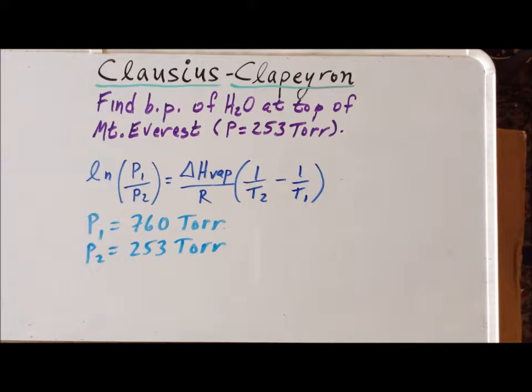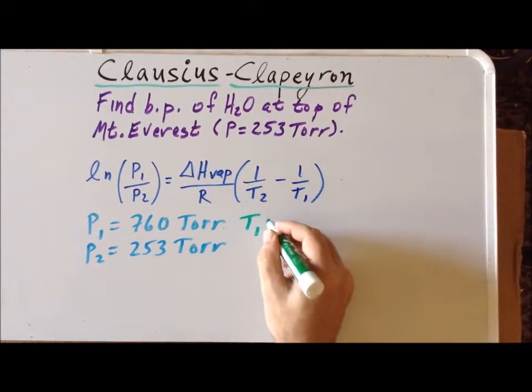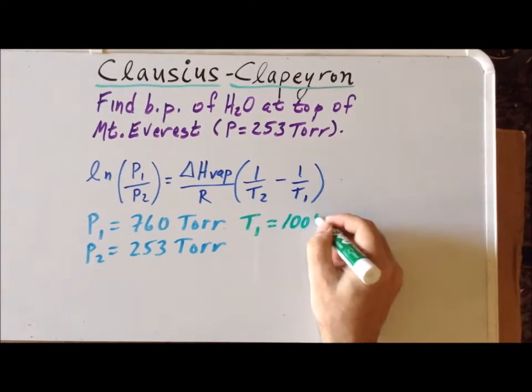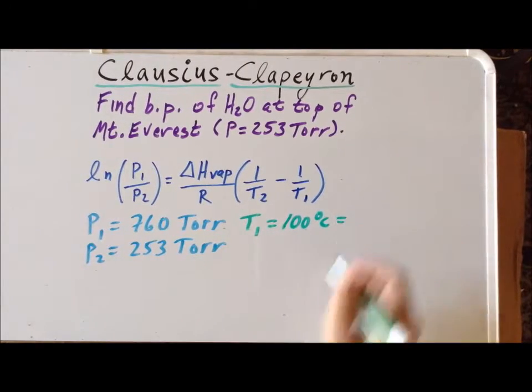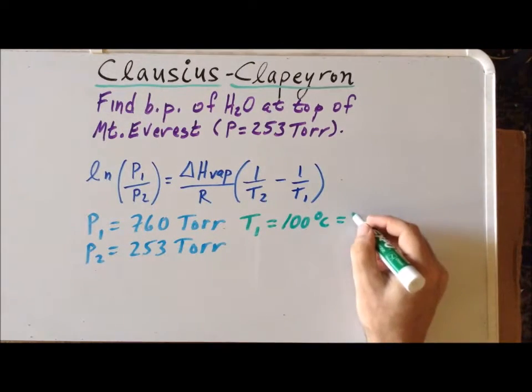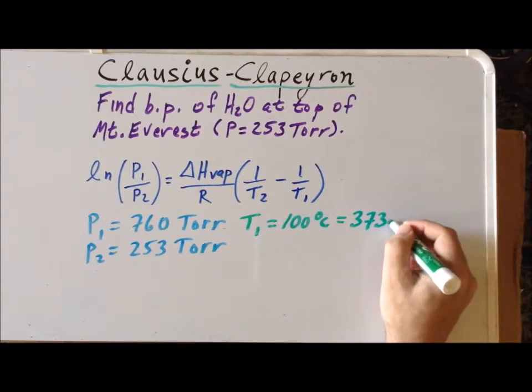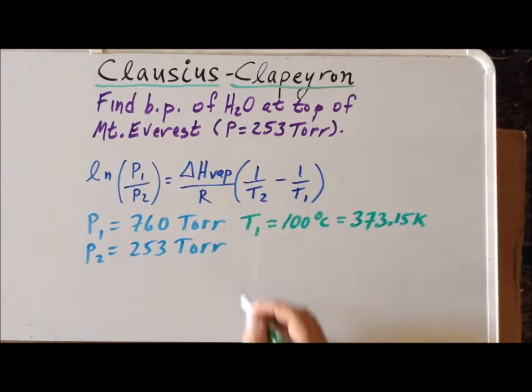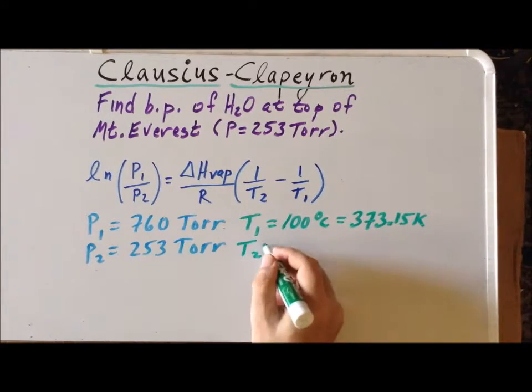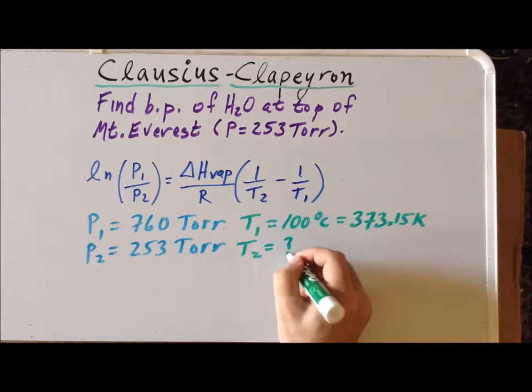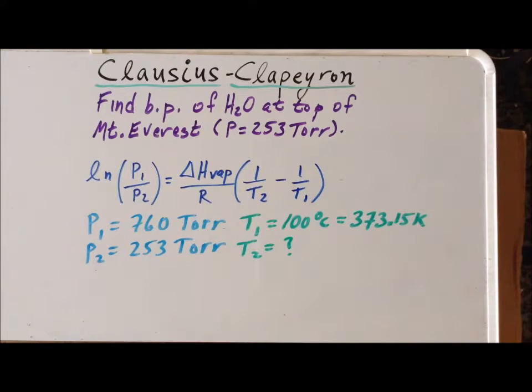Next, as far as our temperatures, T₁ is the normal boiling point of water, which is 100 degrees Celsius, and we always have to convert to the thermodynamic temperature of 373.15 Kelvin. And T₂, in this particular case, is what we're trying to find, which will be the boiling point of water when we reduce the atmospheric pressure to 253 torr.